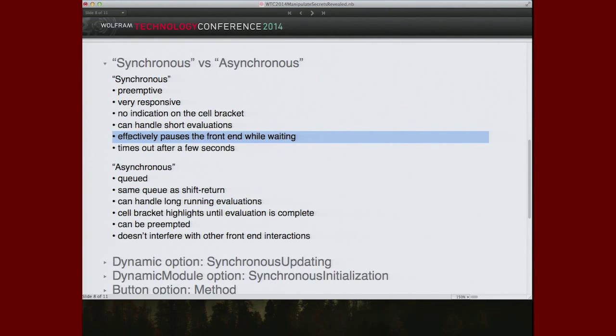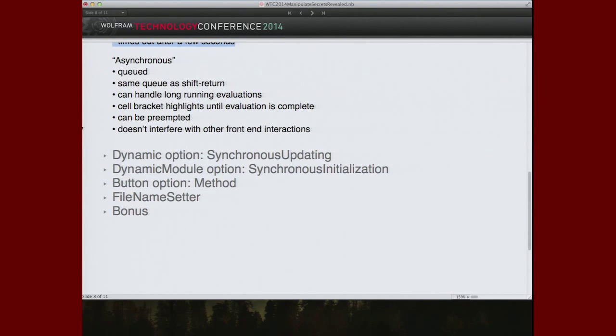Also, the front end completely waits while this evaluation is happening. It's not only intended to be fast, but if it's not fast, then the whole front end will wait for you, will wait for this evaluation to return. Because of that, we can't wait forever. I think the default timeout is something like six seconds. This is sort of the default mode for dynamic. It's the default mode for many controls. It's not the default mode for shift return evaluations. Shift return or asynchronous evaluations, they sit in a first in, first out queue. They can handle evaluations that run for days. You get cell bracket indications running in the title bar. You get this preemptibility that we talked about. Of course, you can keep typing while your evaluation is running. How do you access these two different evaluation modes inside of the dynamic language and, in particular, inside of manipulate?